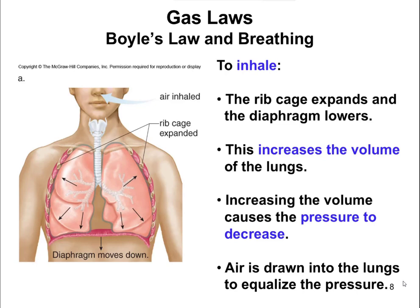Whenever we breathe, that's probably one of the best examples of Boyle's Law. Every time you inhale, your rib cage expands and your diaphragm lowers, which increases the volume of your lungs. Whenever that expands, it causes the pressure to go down, because Boyle's Law is P1V1 equals P2V2 — volume goes up, pressure goes down.